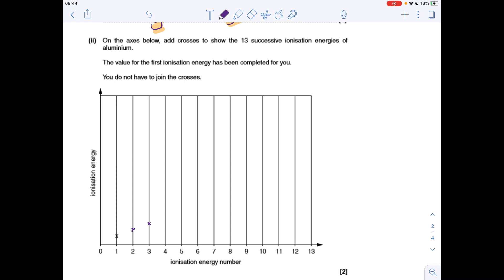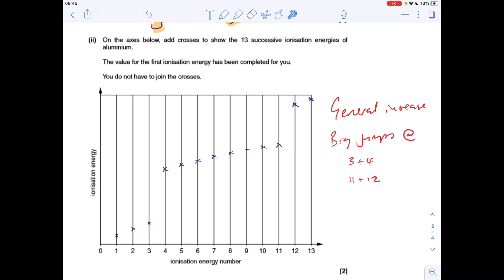So there's that sort of general increase. But when you get to the fourth electron for aluminium, you've broken into a new shell close to the nucleus, so there's a big jump up in ionisation energy. And then the remaining seven in that shell are going to show that general increase. And then the last two electrons in the very inner shell, they're going to be really high, but show that little increase at the end there. So the important thing is to show that general increase and the big jumps between three and four and 11 and 12.